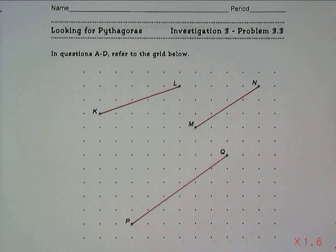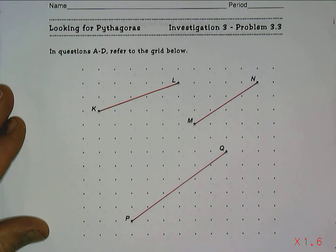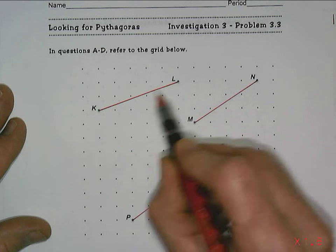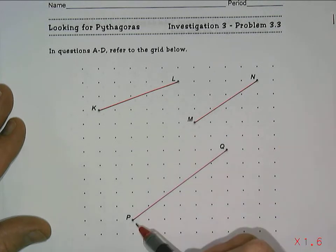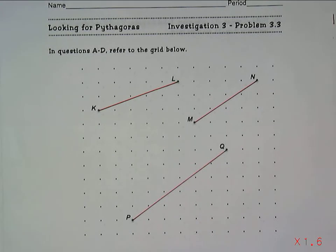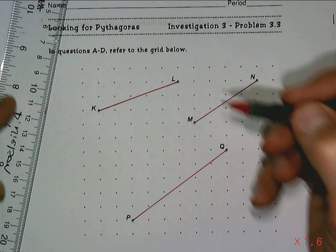In looking for Pythagoras problem 3.3, now that we have the Pythagorean theorem pretty well proven, we can use it to find the length of any line or line segment — from k to l, from m to n, from p to q. Finding distances between points is really the purpose of the Pythagorean theorem. So as I go to solve problems, I want to be able to make right triangles out of any line segment.